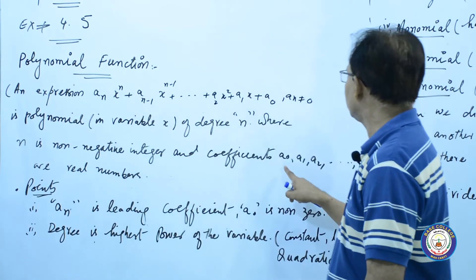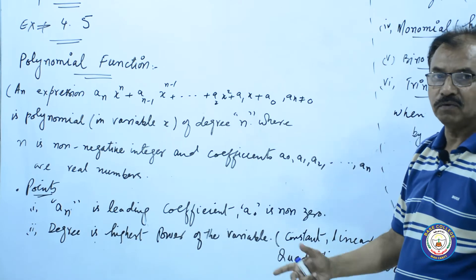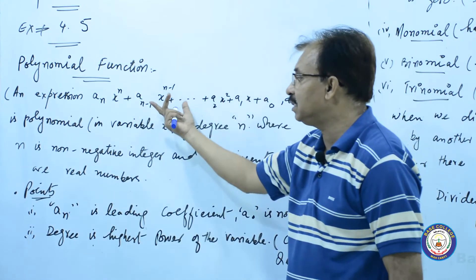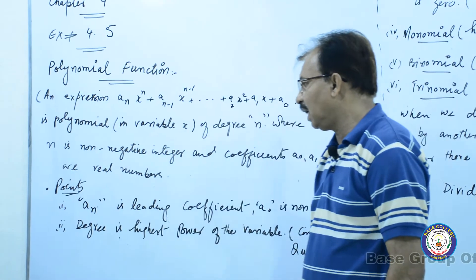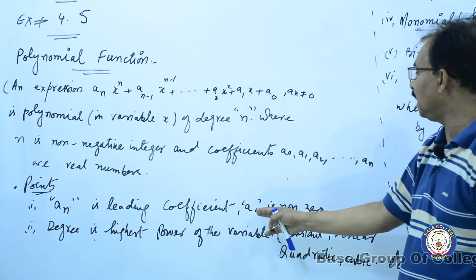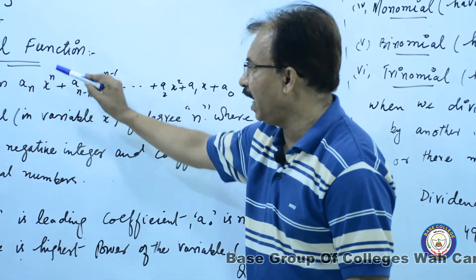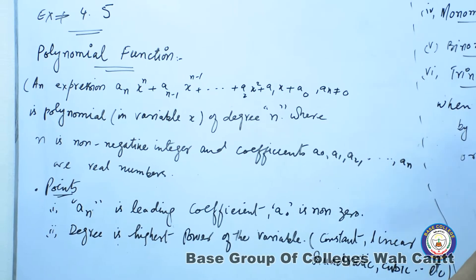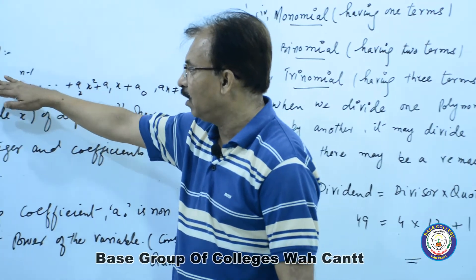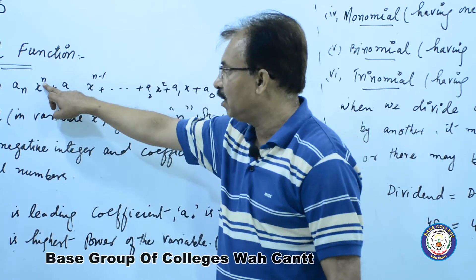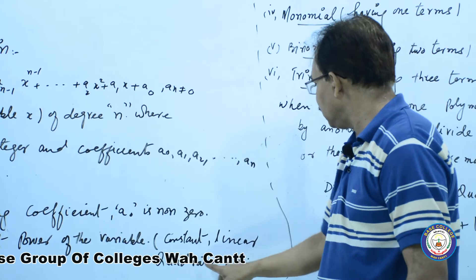اور coefficients یہ جو تھے ہمارے پاس a0 سے شروع ہو کر a_n تک جا رہے ہیں، یہ real numbers ہوں گے، کوئی بھی values، fractions میں بھی ہو سکتی ہے۔ اب ان سے polynomial سے جو MCQs بن سکتے ہیں، اس کی کچھ discussion ہے۔ degree is highest power of the variable، جو بھی polynomial لکھی ہے اس میں highest power جو ہے وہ degree ہے۔ power of variable constant، linear، quadratic، cubic کوئی بھی ہو سکتی ہے۔ اگر quadratic form میں ہے تو degree two، اگر highest power three ہے تو cubic ہوگی۔